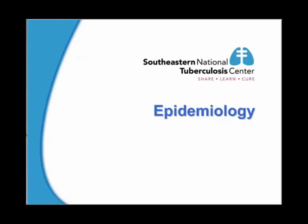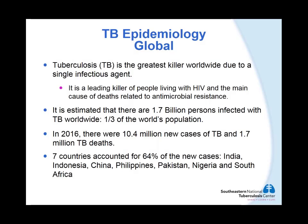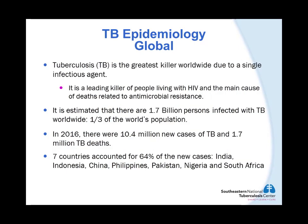Let's review the epidemiology of TB. Worldwide, tuberculosis is the greatest killer due to a single infectious agent. Among people living with HIV, TB is also the number one killer and it is the main cause of death related to antimicrobial resistance. It is estimated that there are 1.7 billion persons infected with TB worldwide — about one-third of the world's population. In 2016, there were 10.4 million new cases of TB and 1.7 million deaths due to TB in the world. Over 95 percent of TB occurs in low and middle income countries. About 64 percent of the reported cases occur in seven countries: India, Indonesia, China, the Philippines, Pakistan, Nigeria, and South Africa.